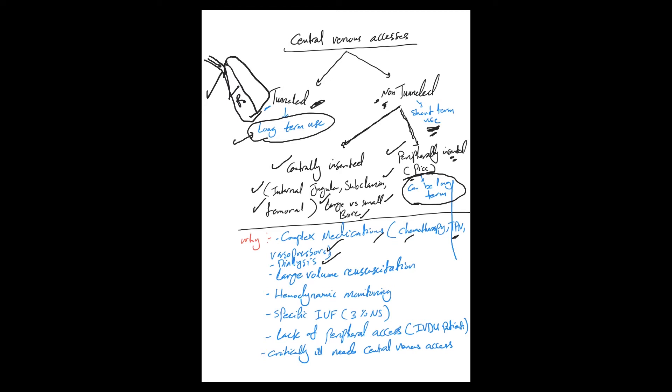Why central lines: large volume resuscitation. If you have a crashing patient with massive GI bleed, you want to give them large amounts of fluid and blood, so you need a central line, preferably large bore. Hemodynamic monitoring - Swan-Ganz catheter or pulmonary artery catheter, or even the regular central line. The IJ mainly can be used for CVP, central venous pressure monitoring, and central venous gas saturation.